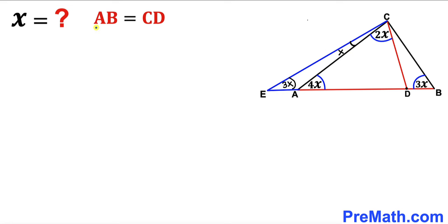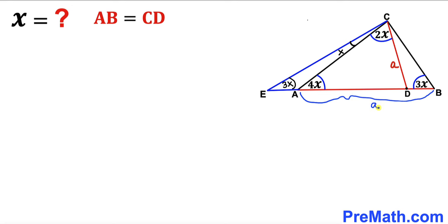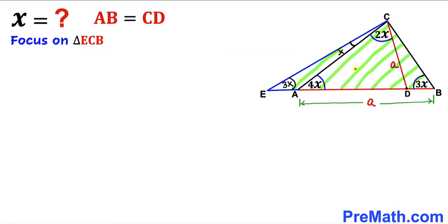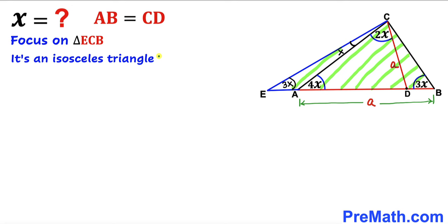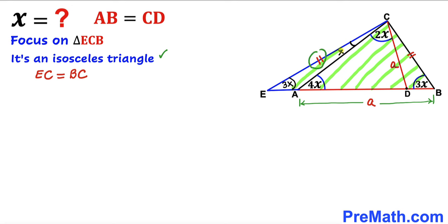Now let's make an observation: side length AB equals CD. Let's call this length lowercase a, so AB is also lowercase a. Let's focus on triangle ECB. We can see that angle ECB is 3x and angle EBC is 3x as well. Since two angles are equal, this is an isosceles triangle, so the side opposite one 3x angle, EC, is congruent to the side opposite the other 3x angle, BC.